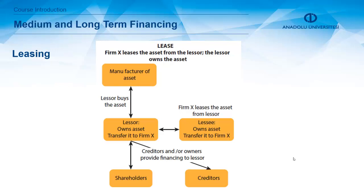The other medium and long-term financing alternative is leasing. Leasing is a contract agreement between the lessor and lessee establishing that one has the right to use an asset and the other may receive periodic payments from the user. There is an owner and there is a user — one is called the lessor and the other the lessee. Leasing is a financing alternative for medium and long-term borrowings.